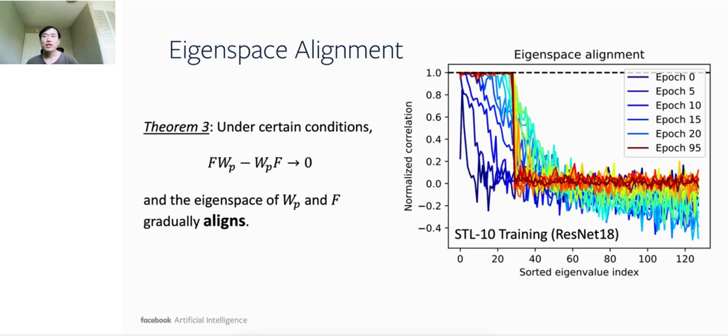This theoretical implication is also verified in the empirical study. In STL-10 training that uses non-linear network, which is ResNet-18, also shows that the eigenspace of F and W_P gradually aligns. Here we detect the eigenspace alignment by checking whether each eigenvector of W_P, ordered by its corresponding eigenvalues, aligns well with that of the correlation matrix F.